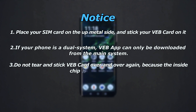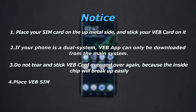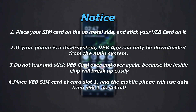Number three — do not tear and stick the VEB card over and over again because the inside chip will break easily. Number four — place the VEB SIM card at card slot one and the phone will use data from this card as default.